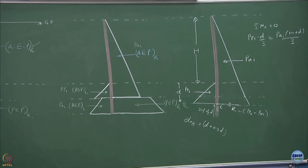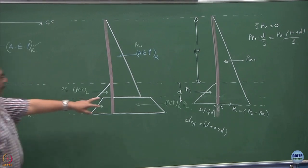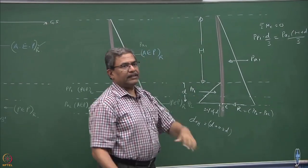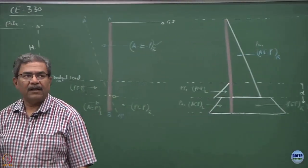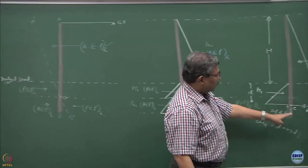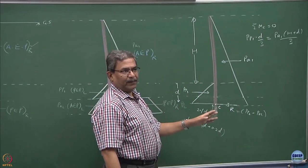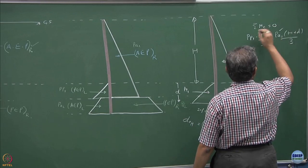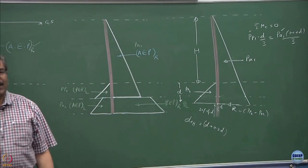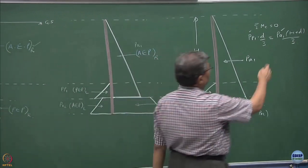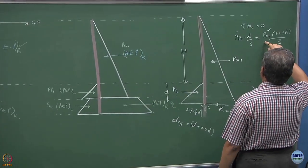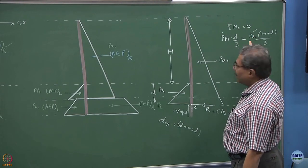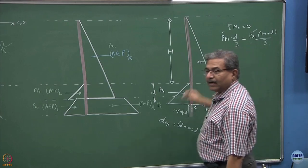The principal unknown here is D, the depth of embedment; H is normally a design parameter. We assume a certain value of H — the height of wall to be created — and solve for D so that the sheet pile remains stable. Since PA1 equals half-gamma(H+D)² times KA and PP1 equals half-gamma-D² times KP, this becomes a cubic equation in D.